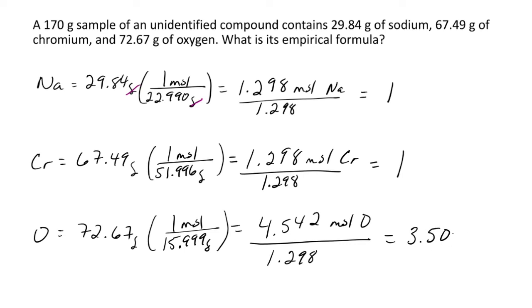Anytime you have a 0.5, you want to multiply by 2 to get rid of the decimal. But you also have to multiply all other elements in the compound by 2.